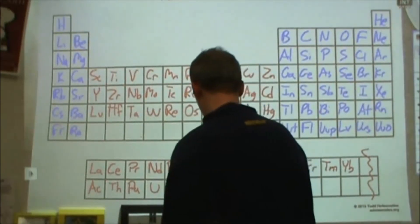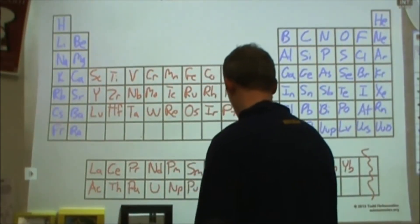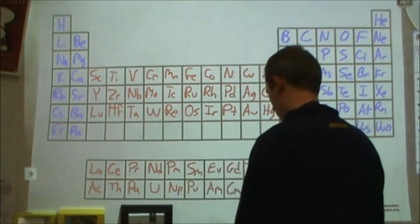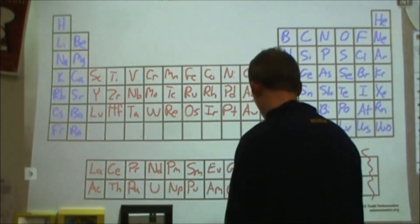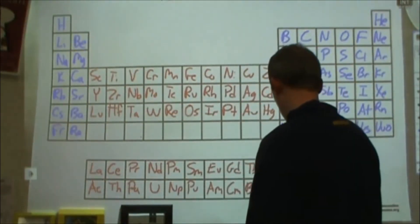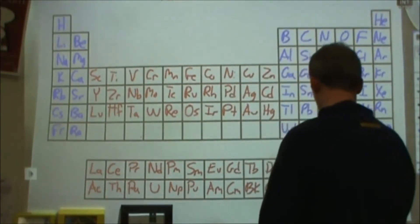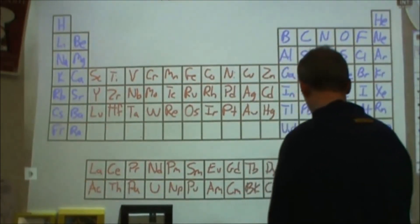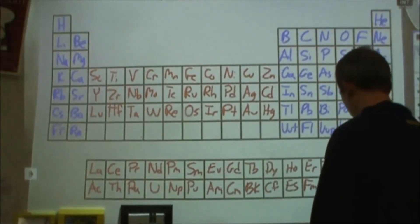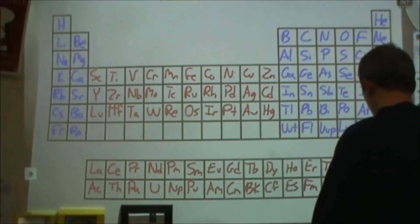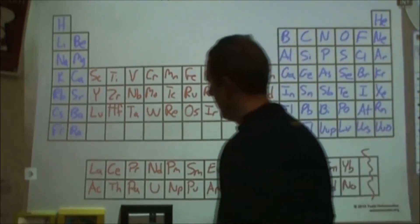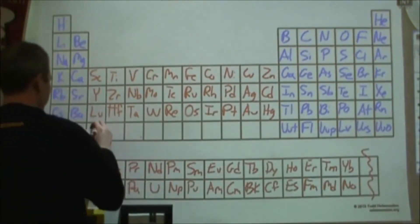And then we're going to have americium, smoke detector, curium, after Marie Curie, and then berkelium. And then we're going to have californium, einsteinium, and fermium at number 100. And 101 is mendelevium and nobelium. And then over here we have lawrencium.